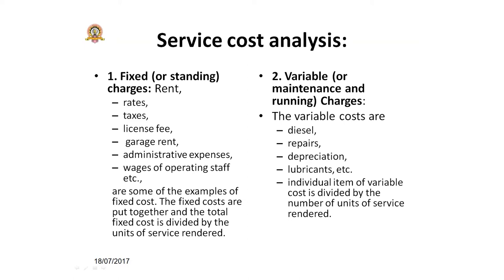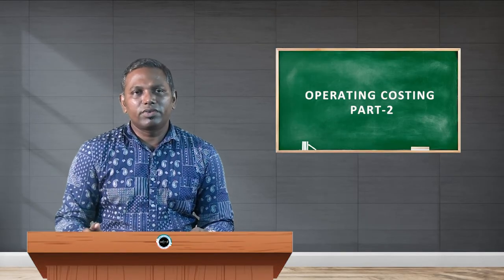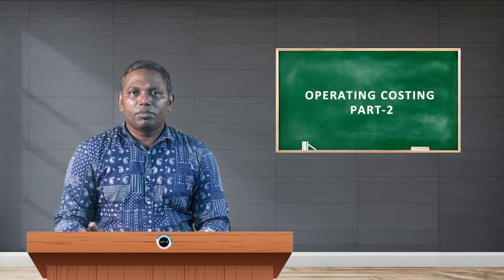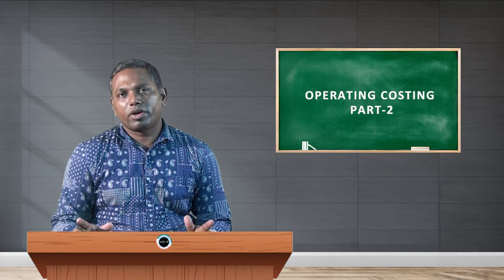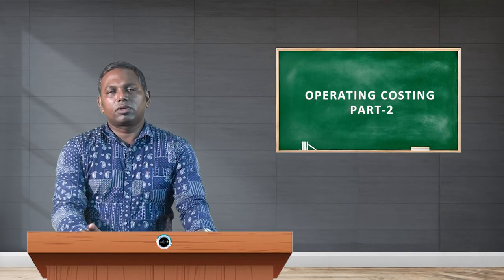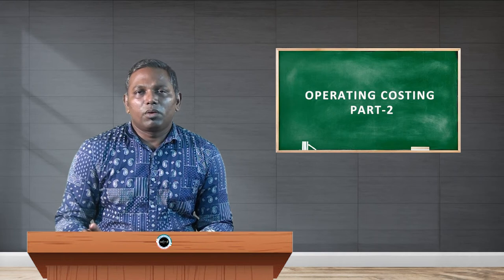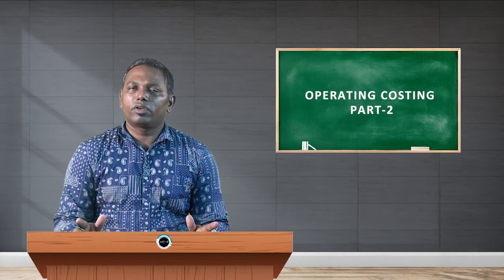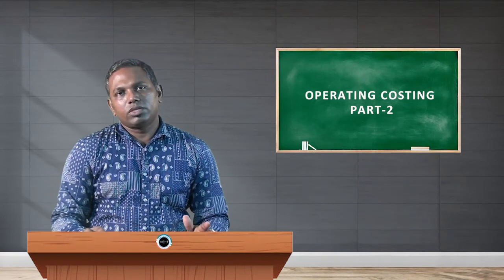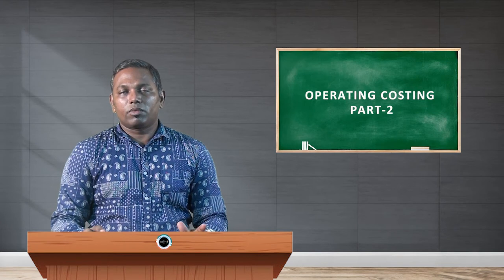If you want to calculate the variable cost per unit, it is very easy: total individual cost divided by number of units or services rendered. In the case of a transportation company, that means dividing by the number of kilometers of service provided. For example, if you are consuming one and a half lakh worth of diesel per annum, divide that by the total number of kilometers run by the vehicle, and you will get the diesel cost per kilometer. Likewise, you can calculate the variable cost per unit.